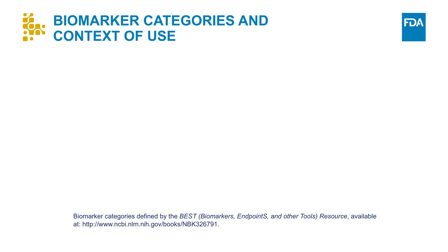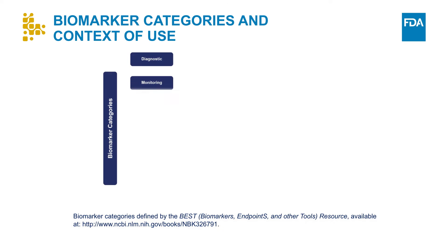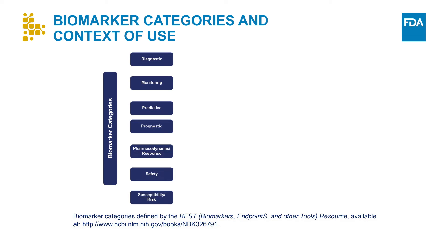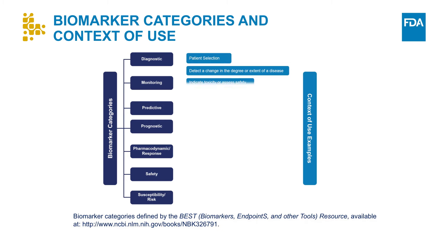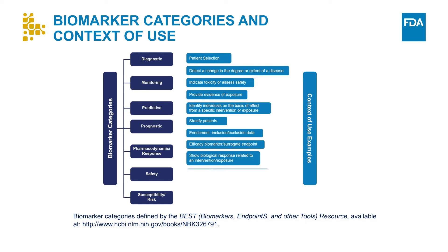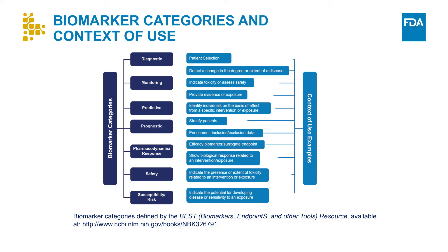The BEST glossary defines seven categories of biomarkers shown in the slide. It's important to remember that each biomarker category can have multiple contexts of use. For example, a prognostic biomarker can be used to stratify patients or for enrichment in clinical trials.